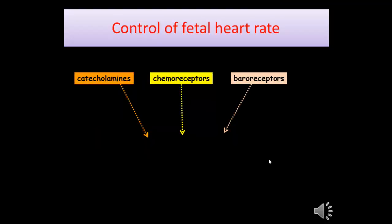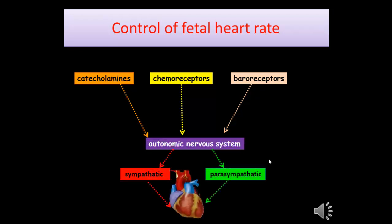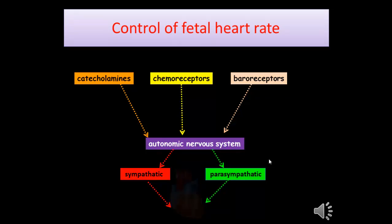Different factors affect the fetal heart rate: catecholamines, chemoreceptors, and baroreceptors act through the autonomic nervous system — both sympathetic and parasympathetic — which leads to controlling the fetal heart rate.